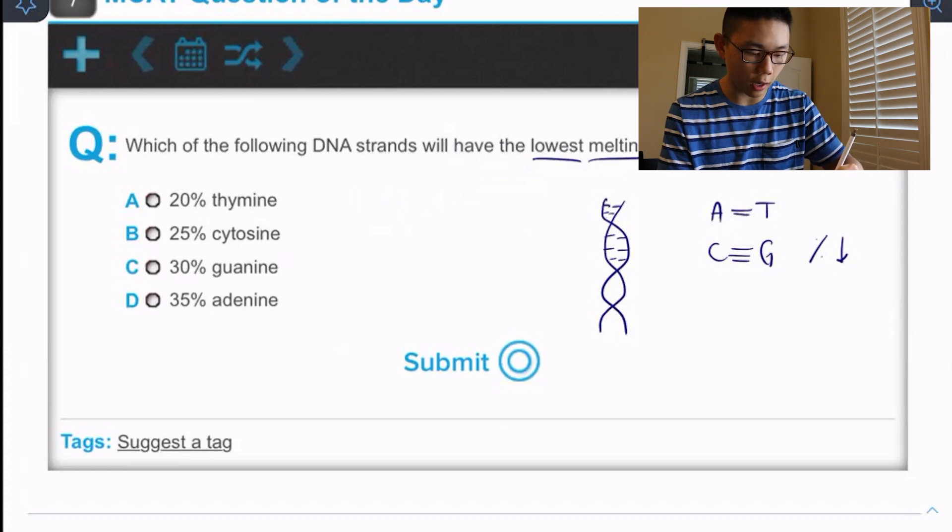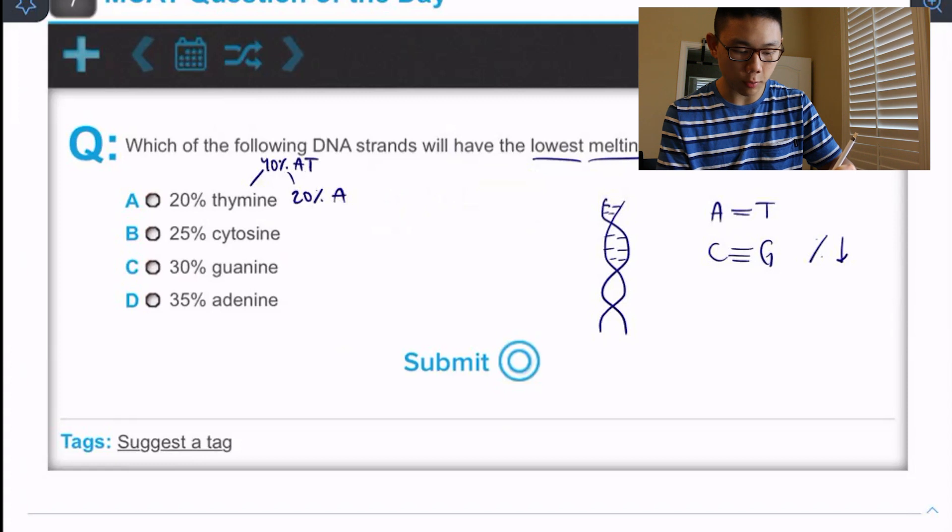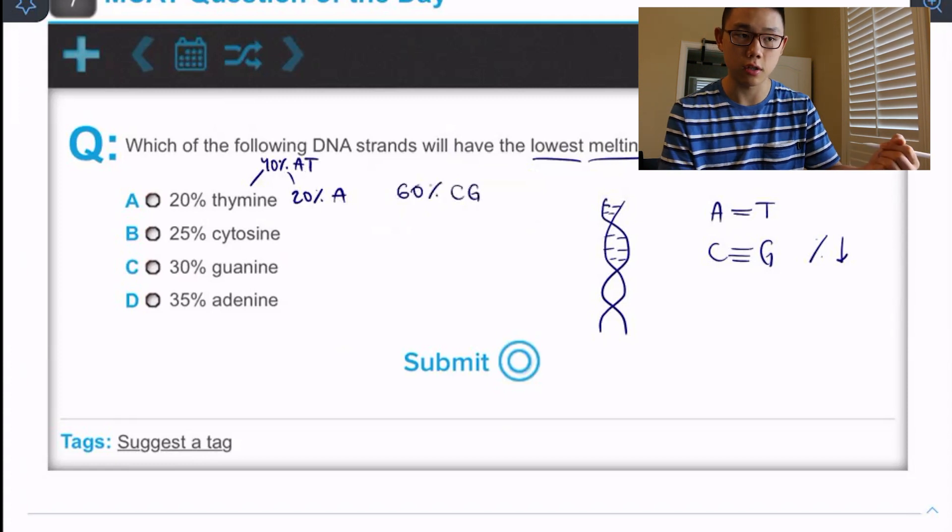So we can say that for answer choice A, that's also telling us that we have 20% of A, giving us a cumulative of 40% A T base pairing. Okay. That also tells us that we have a cumulative of 60% C G because that's just what's left.